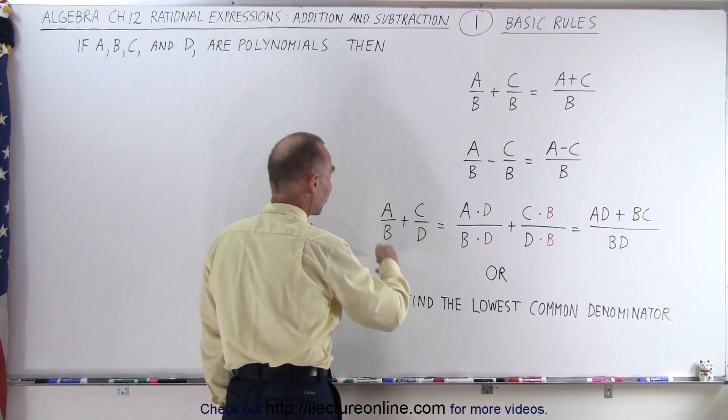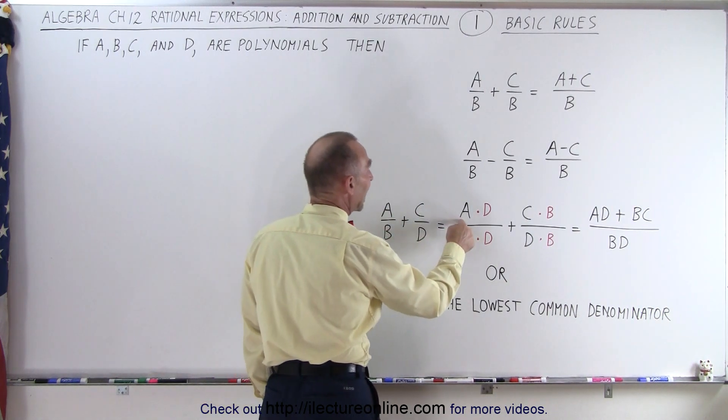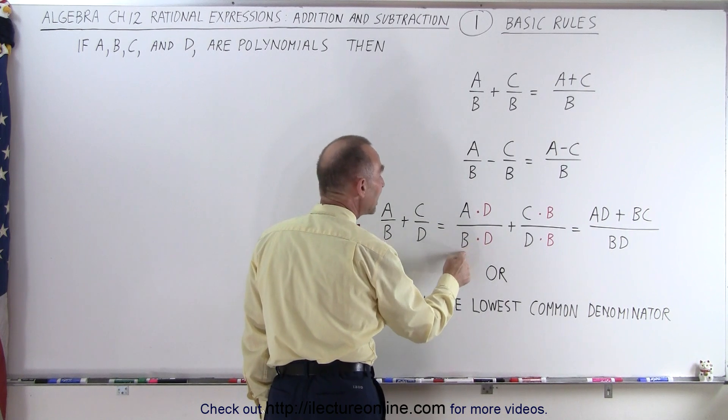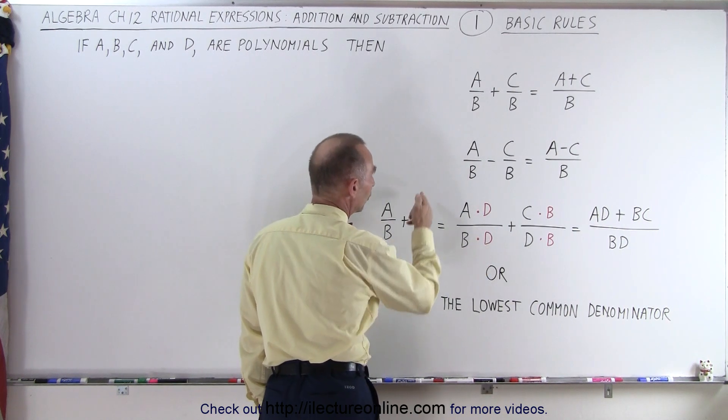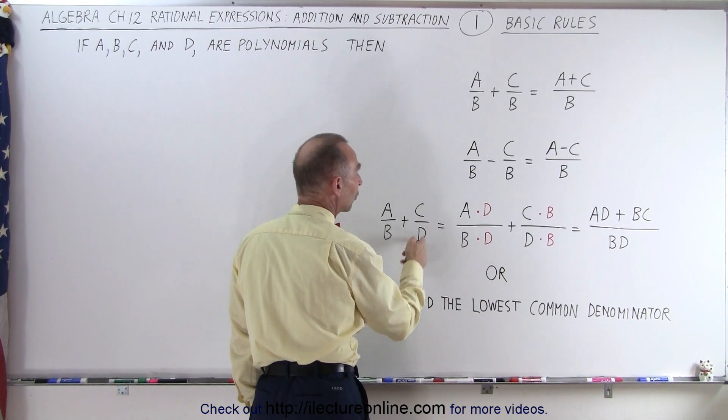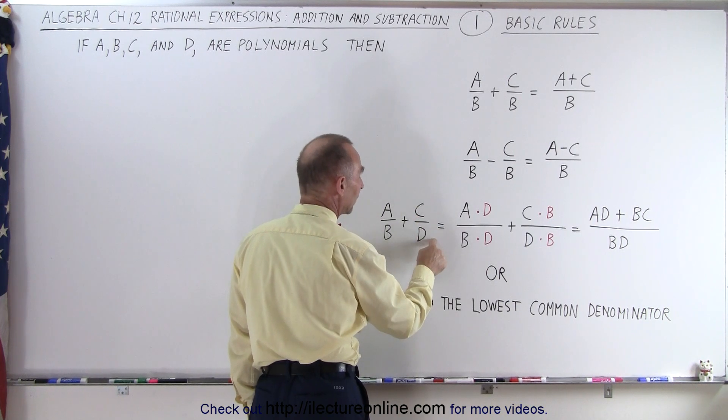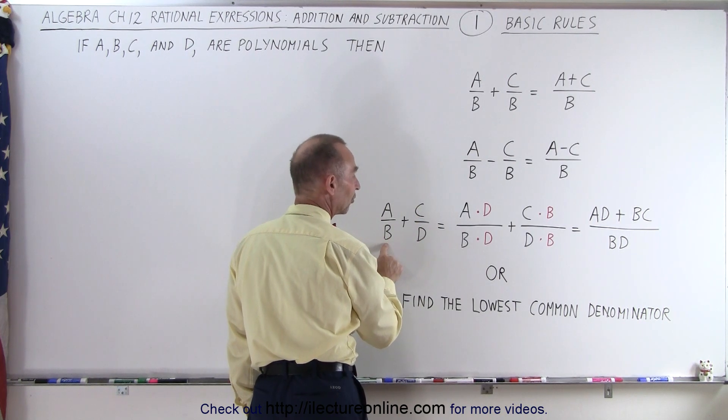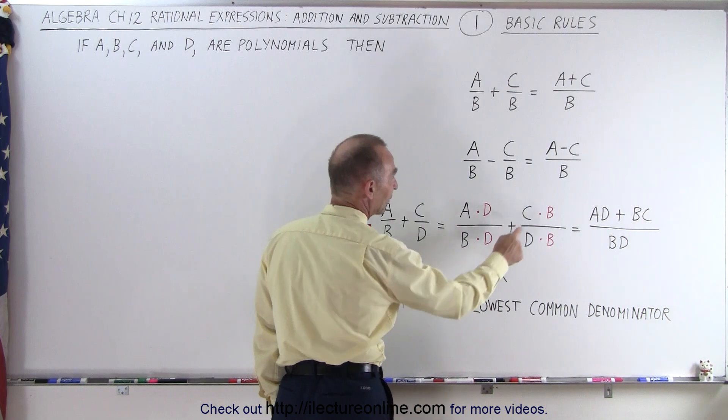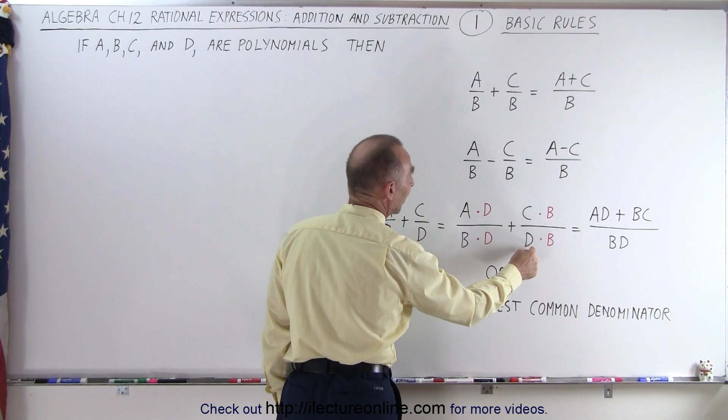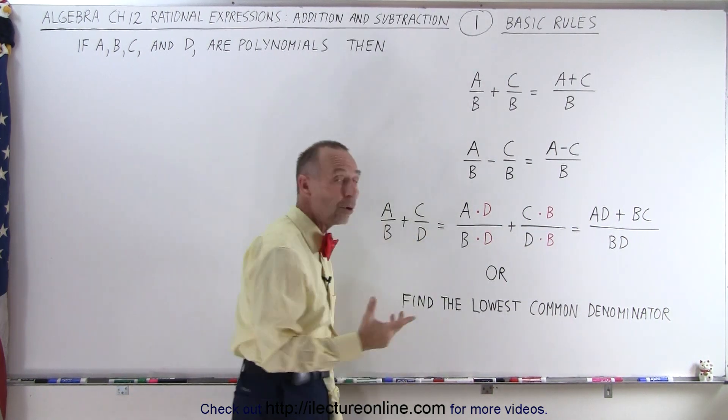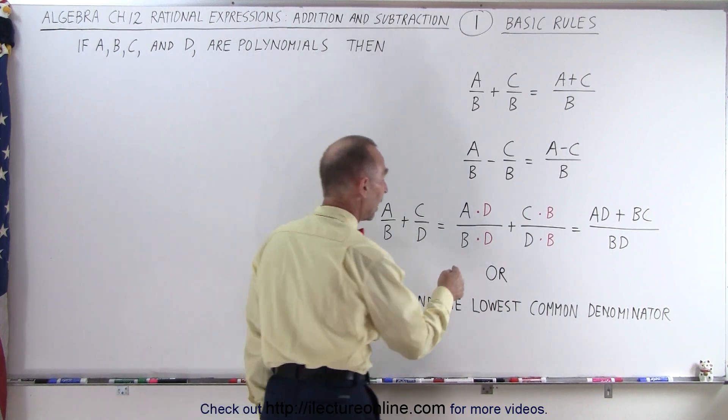So notice our left fraction A over B becomes A times D over B times D. We do the same for the second one, but now we're going to multiply the numerator and the denominator by the denominator of the first fraction. And so here we have C times B divided by D times B. Now, notice both denominators are the same.